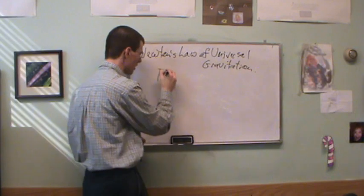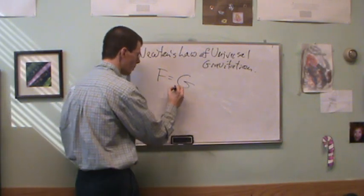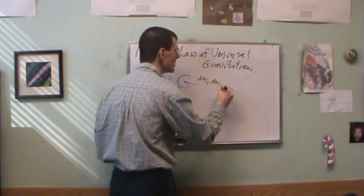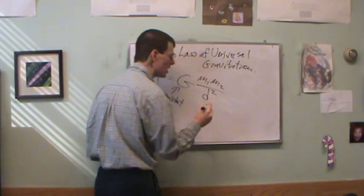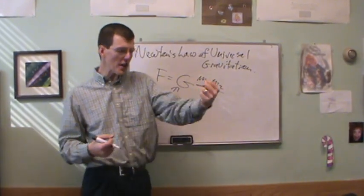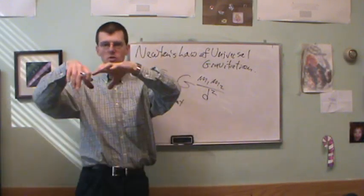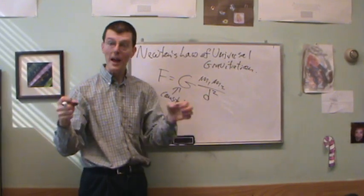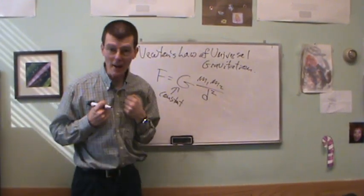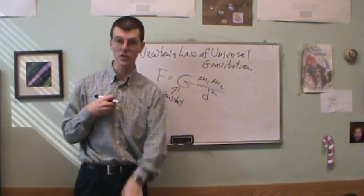The force of gravity is equal to capital G — a constant we'll mostly ignore — times the product of the two masses, mass 1 times mass 2, divided by the distance between them squared. To calculate the force of gravity between the Earth and the moon, I take Newton's gravity constant, multiply the mass of the Earth times the mass of the moon, and divide by the distance between their centers.